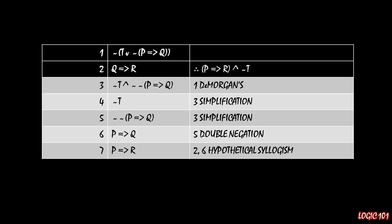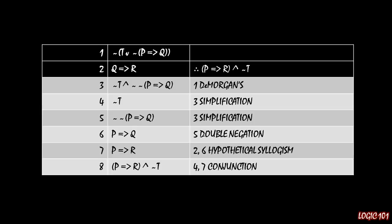And you'll notice now that our work is done. We want to prove that P implies R and NOT T, we've done each of those individually, so if we just conjoin them together, we have P implies R and NOT T through lines 4 and 7, applying our rule of conjunction, and we are done now.